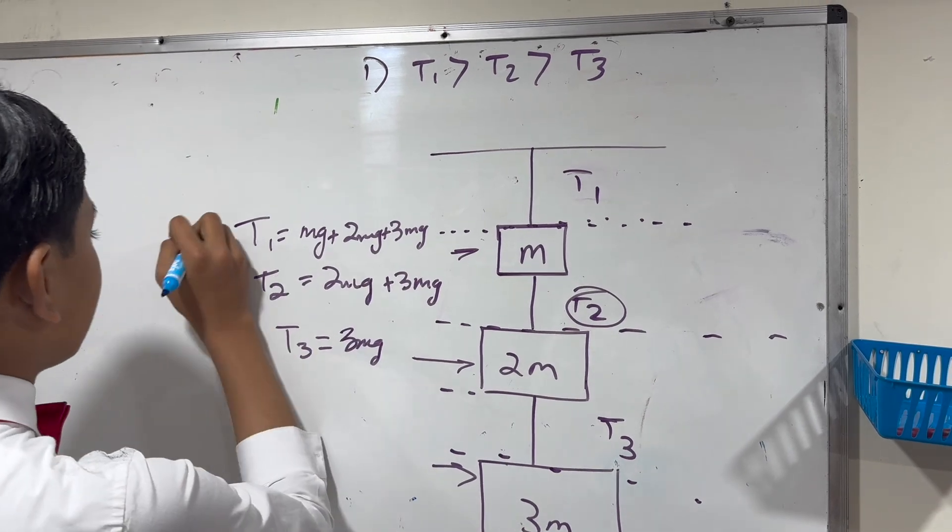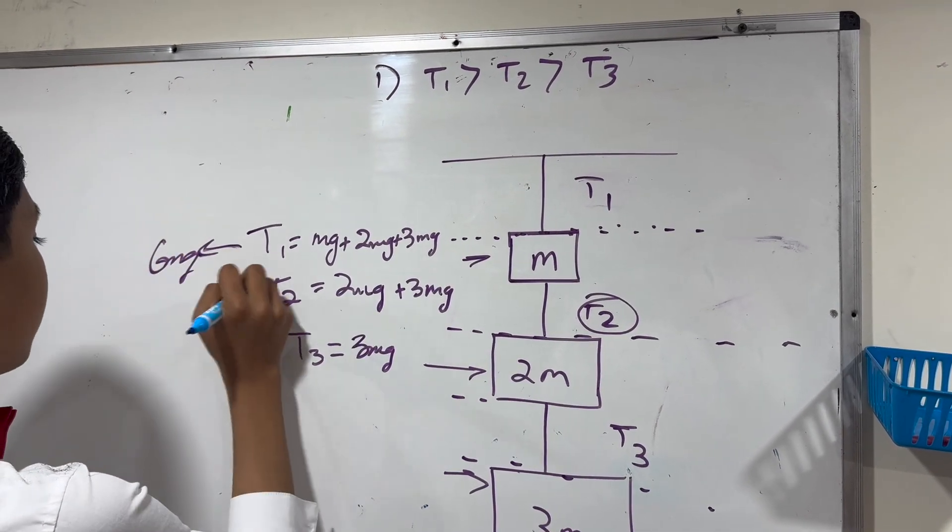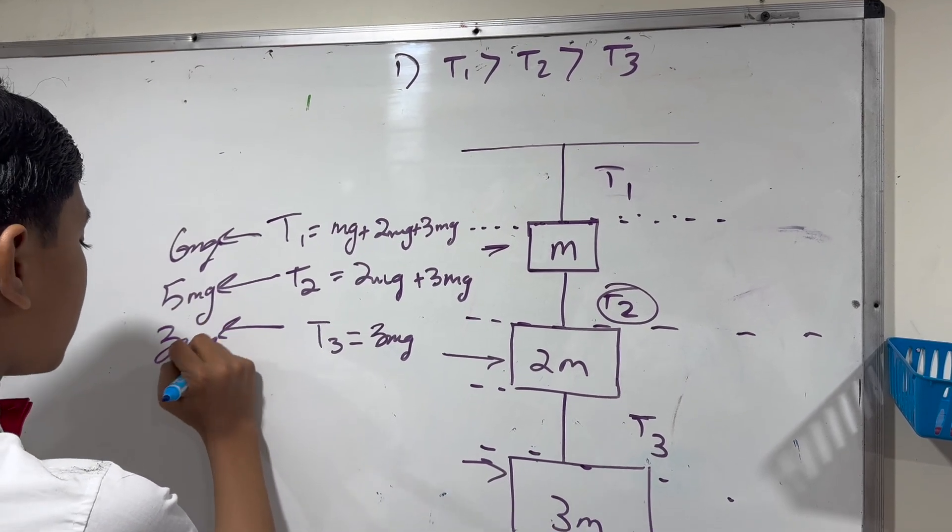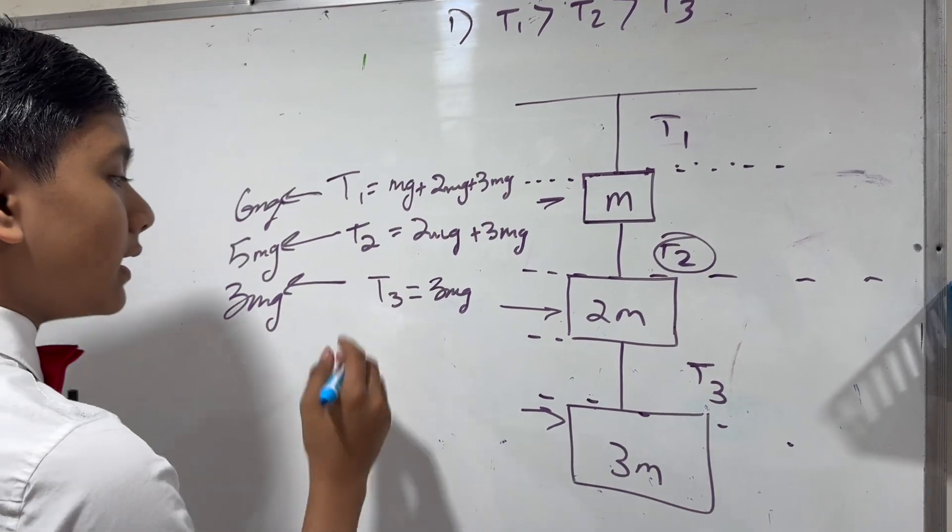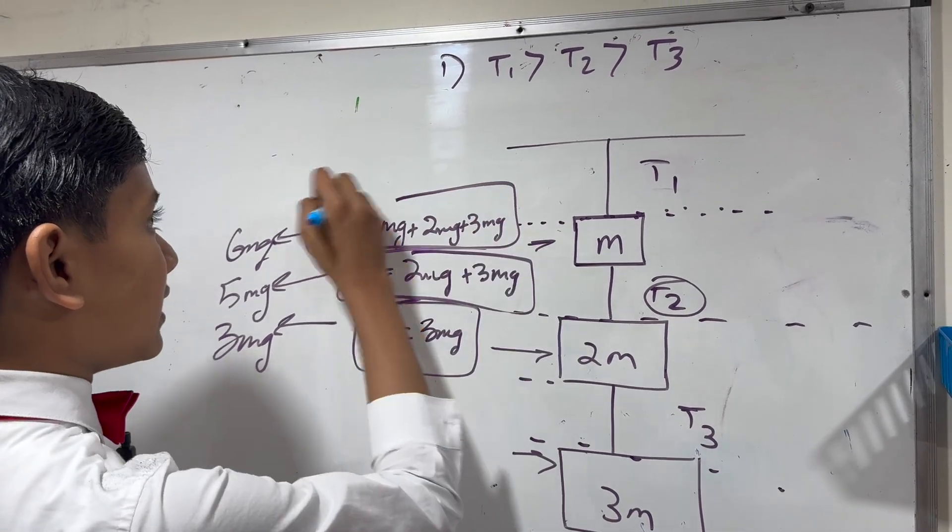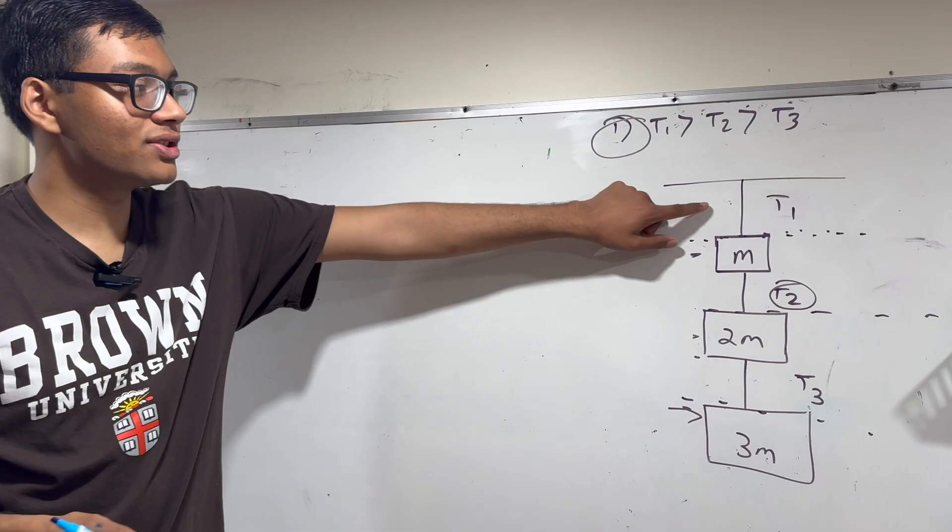So even without adding them up to get 6, 5, and 3, you can see pretty easily that T3 is the smallest, T2 is next, and T1 is at the top.